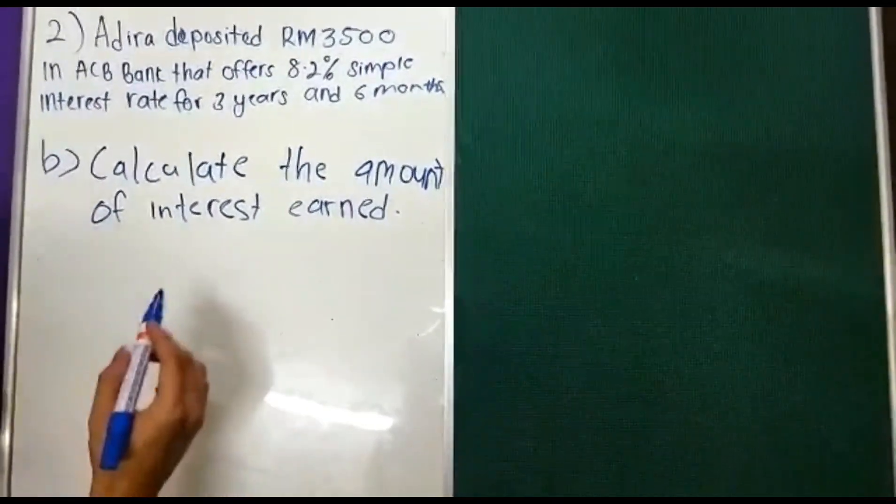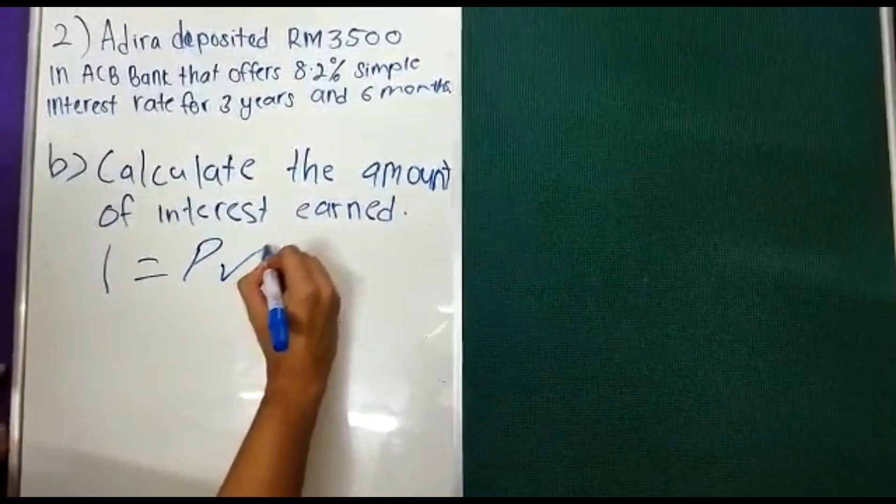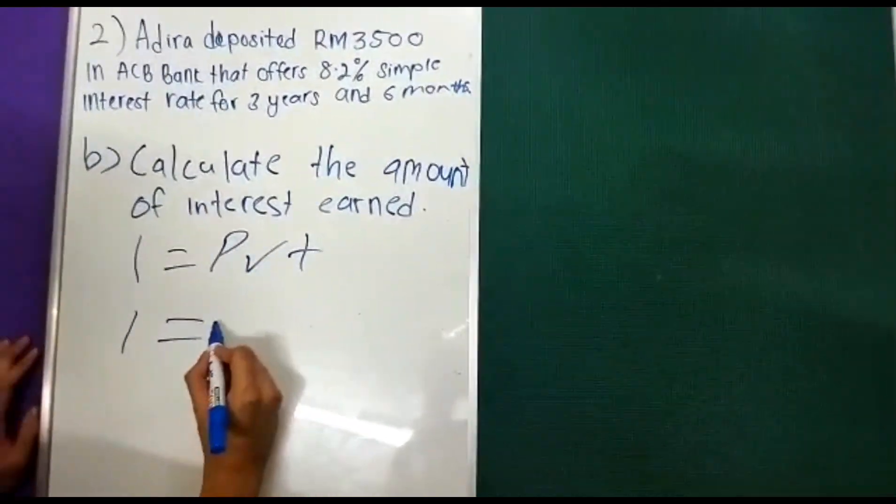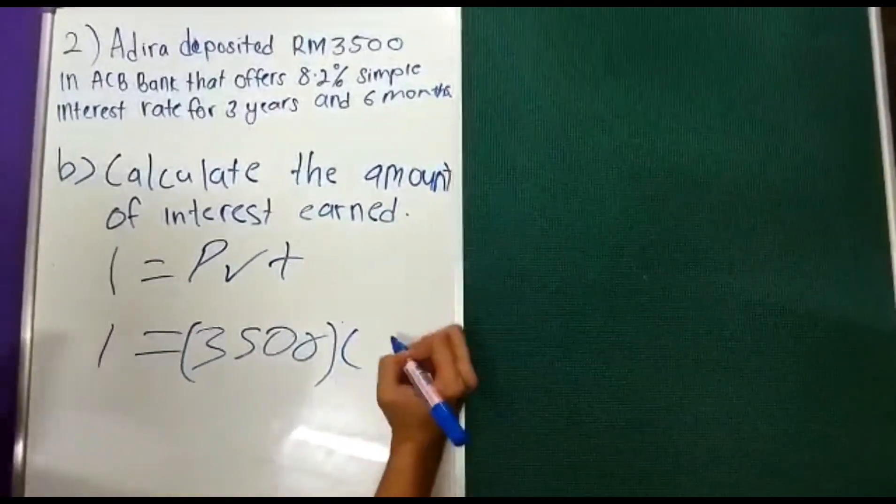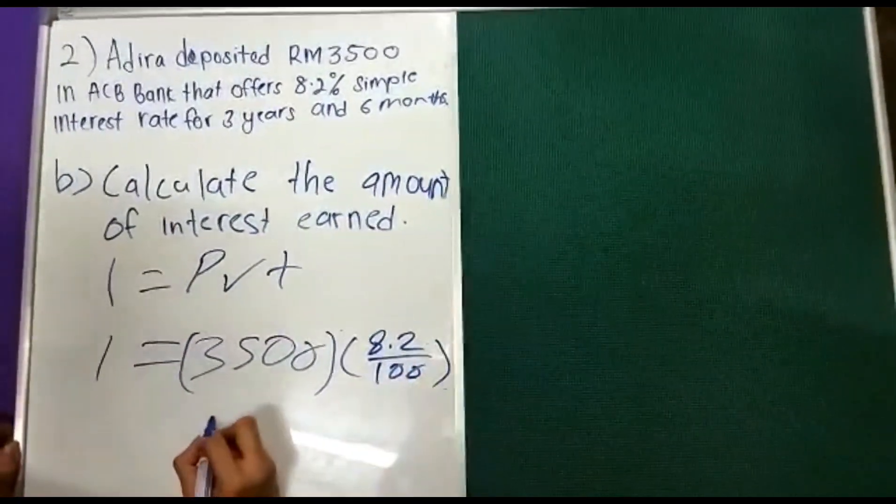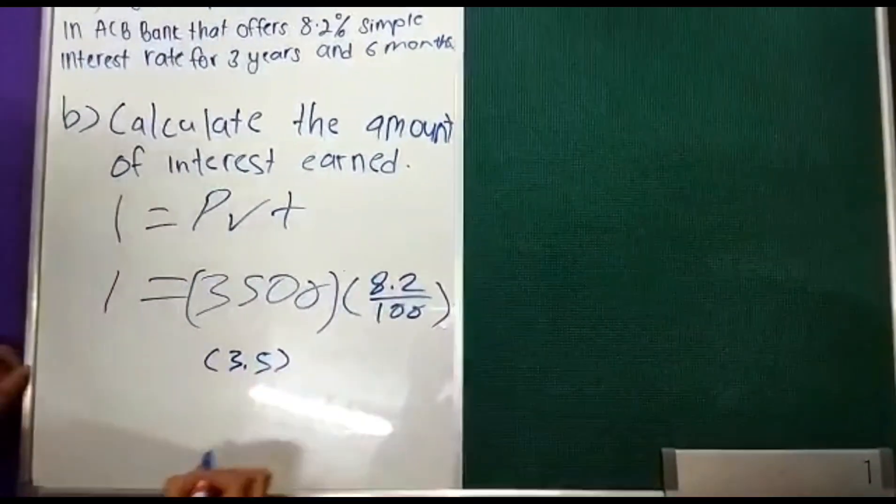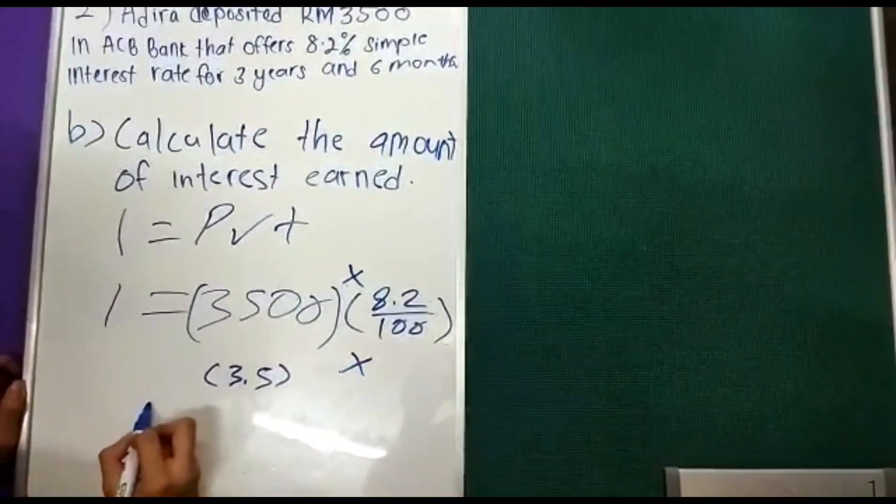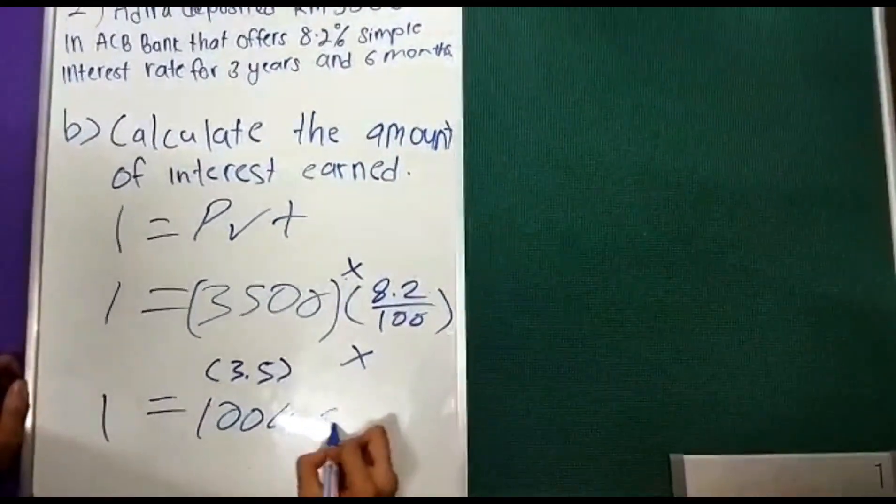Question B, calculate the amount of interest. To calculate the amount of interest, you need to use the I equals PRT formula. P is 3500, R is 8.2 per 100, and T is 3.5. Then you multiply everything, and you'll get I which is RM1,004.50.